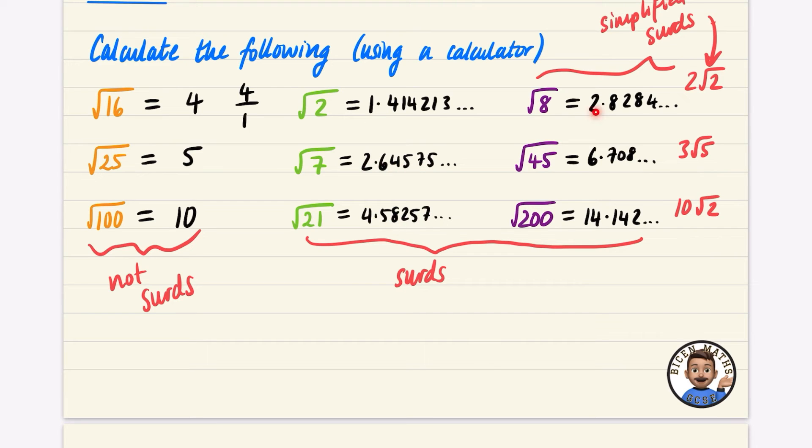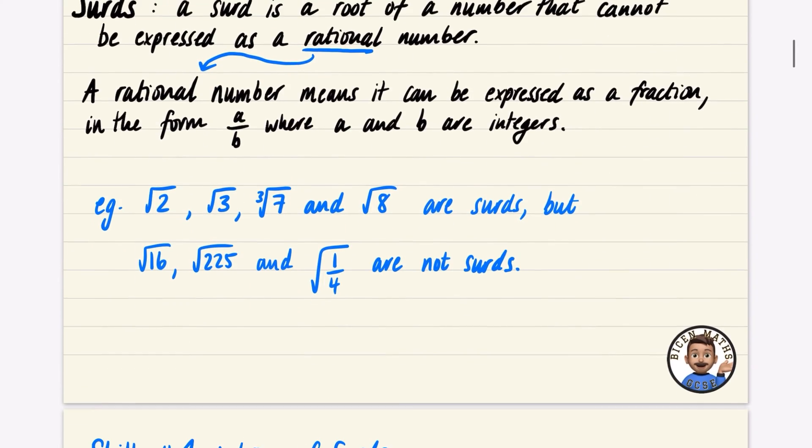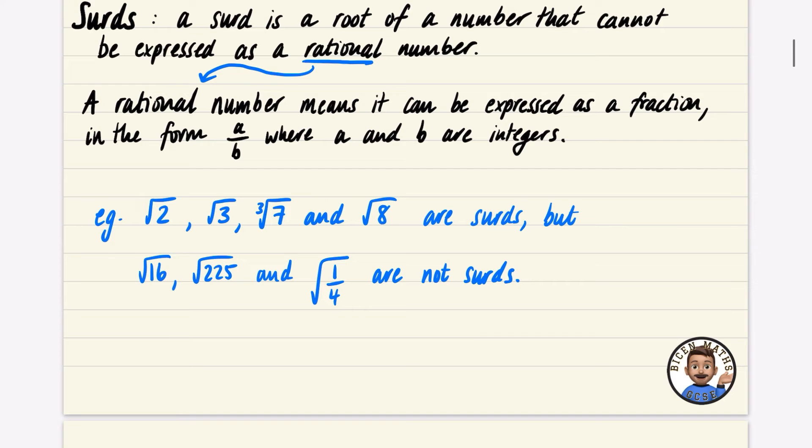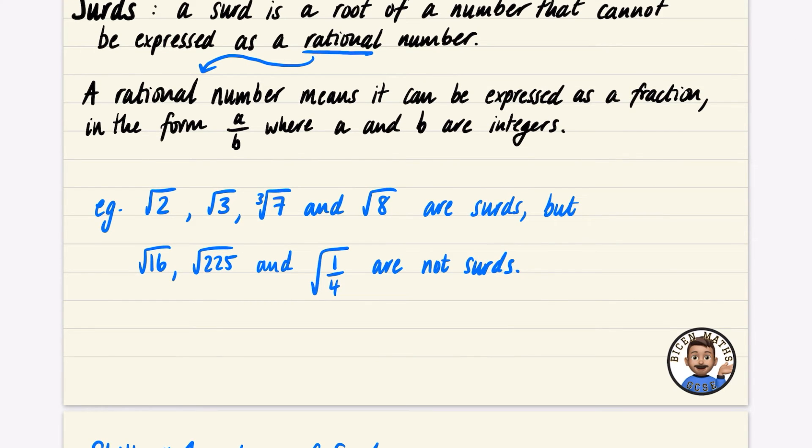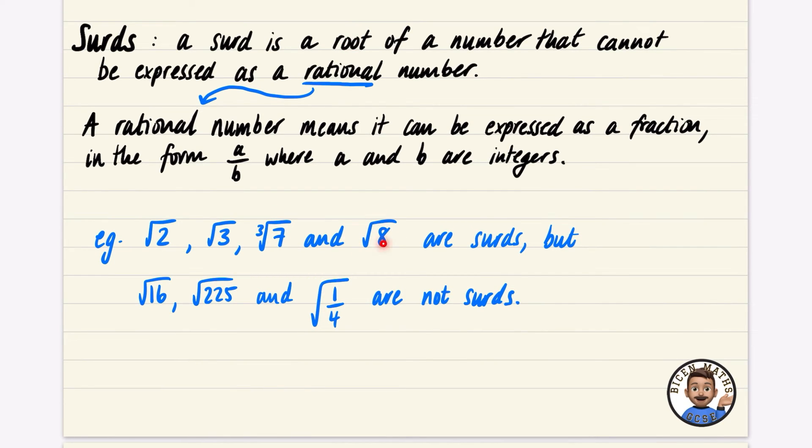These ones - all these numbers I've got written in black here - cannot be written as a fraction a over b where this is an integer and this is an integer, where those two things are whole numbers. So let's just see this with a bit of an examination. These ones here: root 2, root 3, the cube root of 7 - it didn't say square root, just any root of a number - and the square root of 8 are all surds. But remember, root 8 can be simplified, and we'll learn how later on, to 2√2.